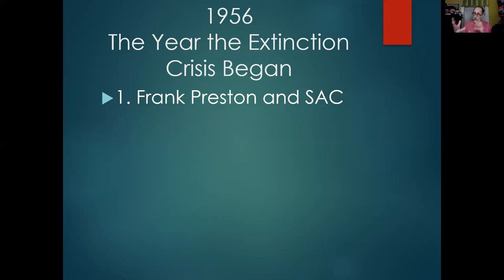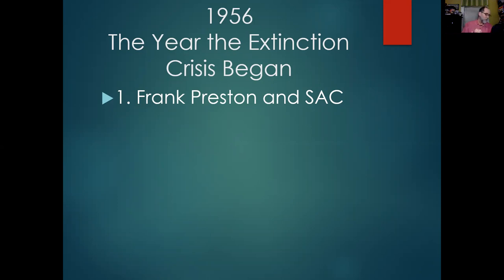Two people that year both had epiphanies and did things that set off what we could call the extinction crisis. Of course, we've had five major extinctions on the planet over the millions — or billions — of years of the planet's age. Some people have argued in the last few decades that we might be in the sixth major extinction — we may just be starting.